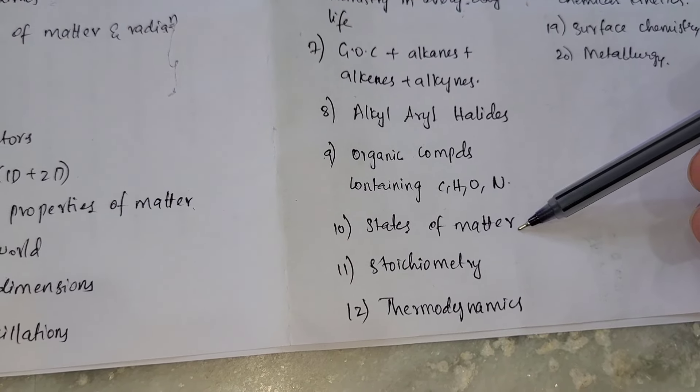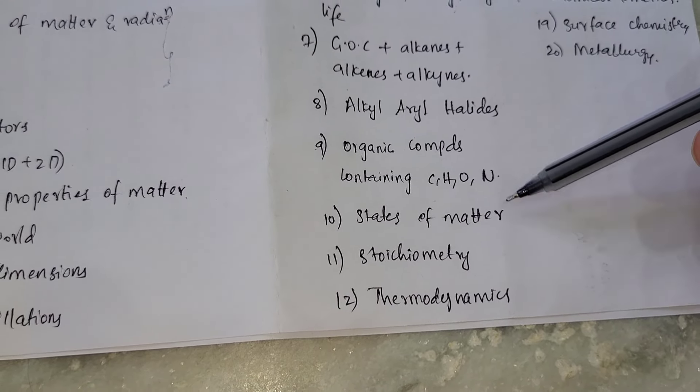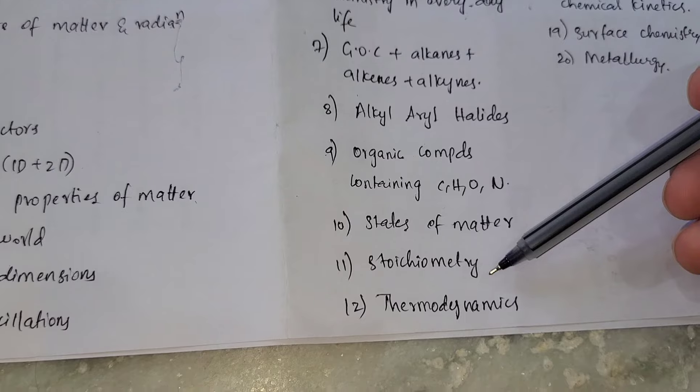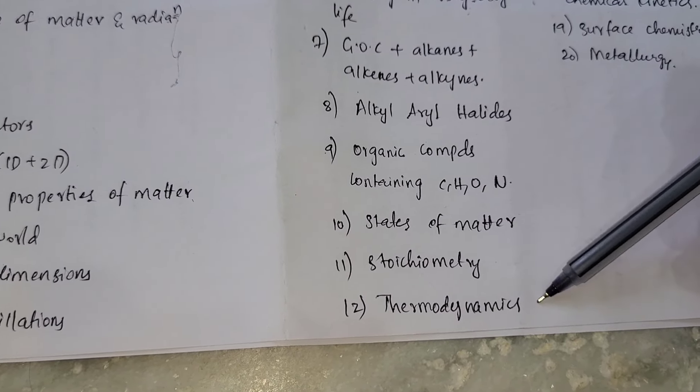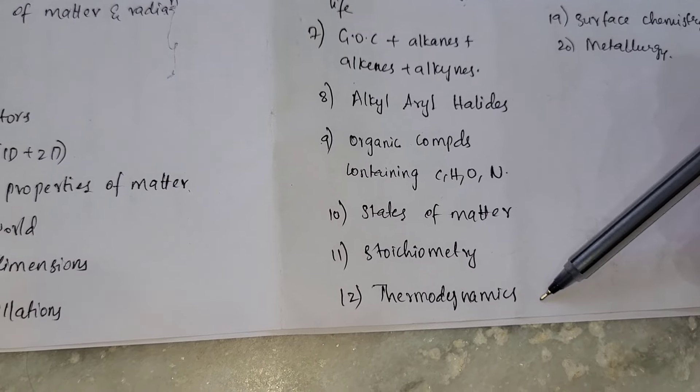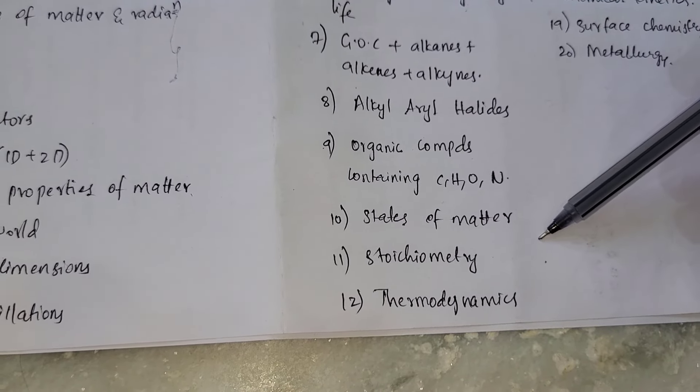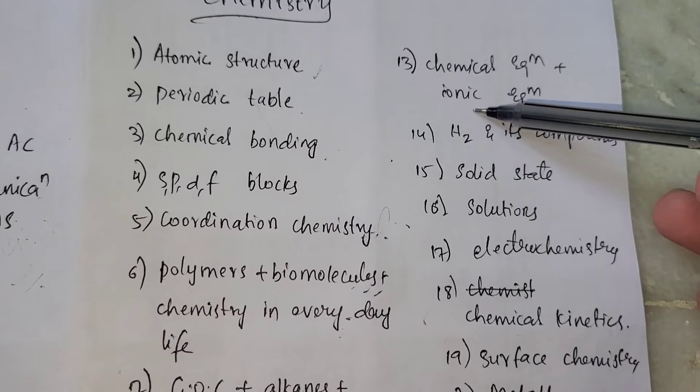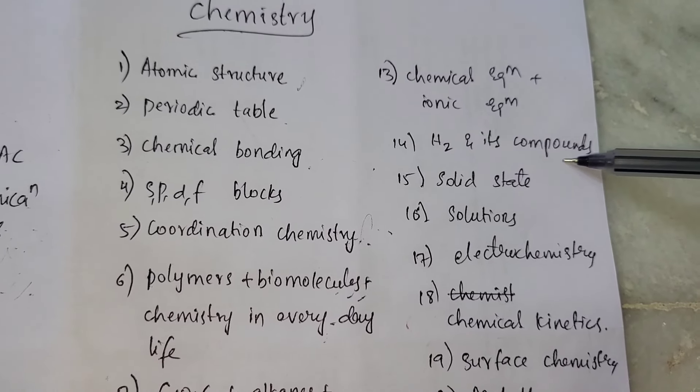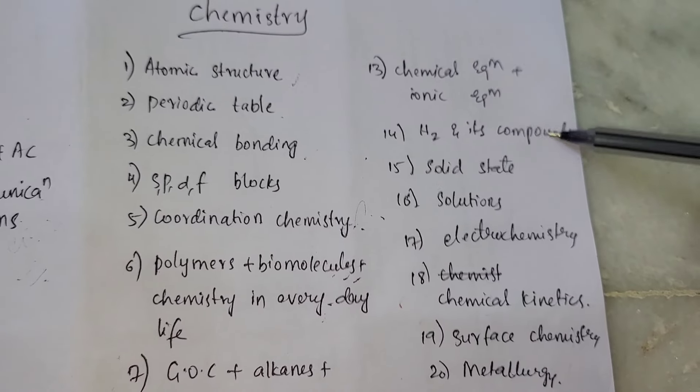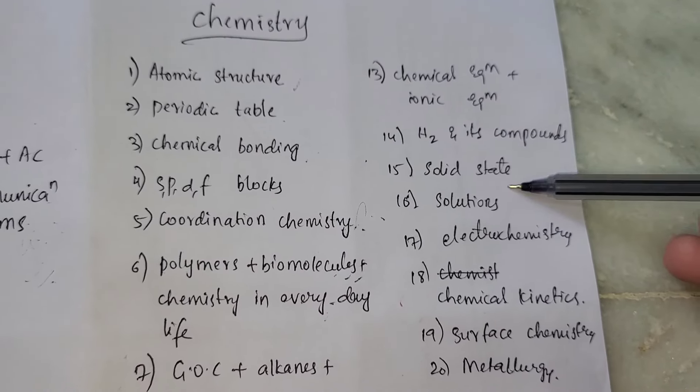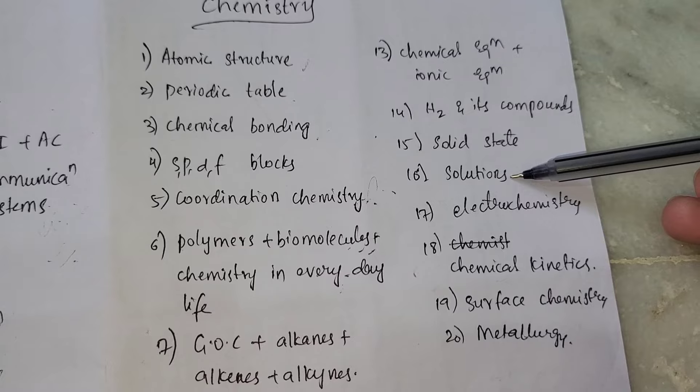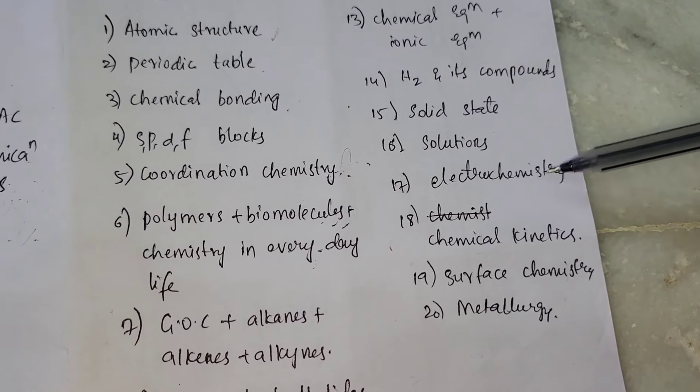In states of matter, use the basic laws, use the forces. Next, stoichiometry - basic questions. Thermodynamics - use physics and chemistry, sign convention, first chapter. Coming to chemical equilibrium, ionic equilibrium - ionic form is tough, so use the chemical. H2O and its compounds - peroxide, H2O2 - numerical questions, theory questions. Next, solid state - packing efficiency, high efficiency values, basic numerical. Next, solutions - freezing point, boiling point, osmotic pressure, RLVP.